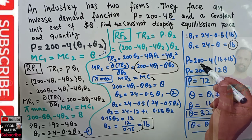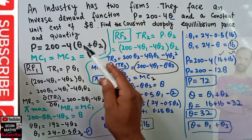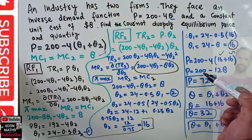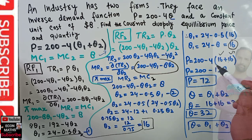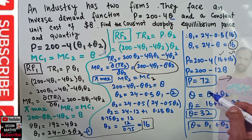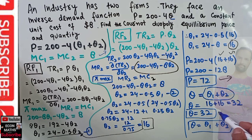The market price is P = 200 minus 4(Q1 + Q2) = 200 minus 4(16 + 16) = 200 minus 4(32) = 200 minus 128 = 72. The equilibrium total quantity is Q = Q1 + Q2 = 16 + 16 = 32. So the Cournot duopoly equilibrium price is 72 and the equilibrium quantity is 32.